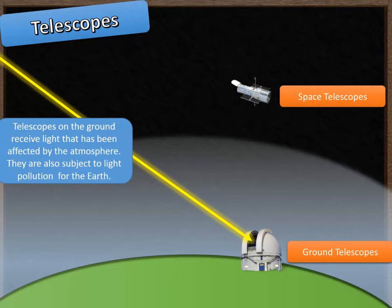However, in recent years we've been able to put telescopes in space. That removes this problem so the light doesn't get affected by the gases in the atmosphere. The other benefit of having telescopes in space is that those telescopes aren't subject to light pollution from buildings, towns, cities, etc. on the Earth.